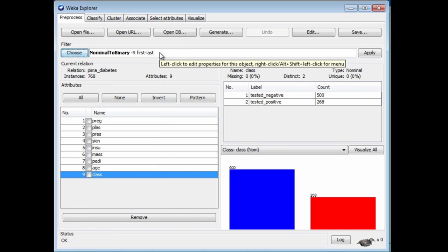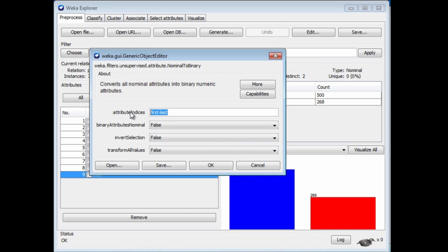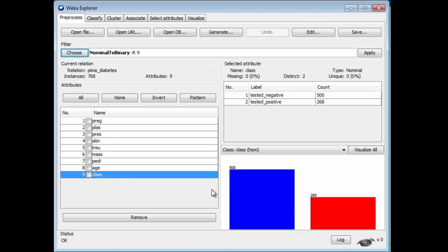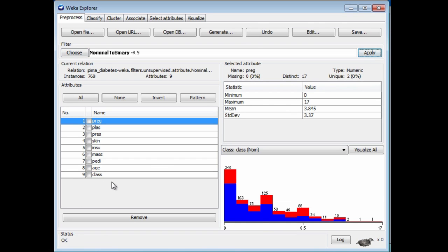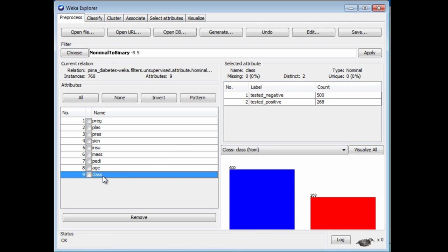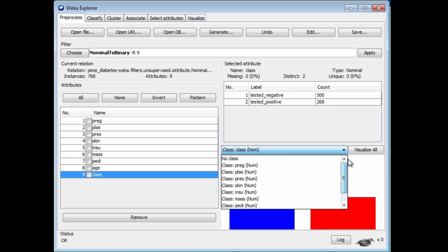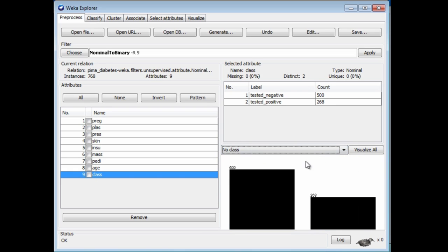We want to apply that to the 9th attribute. This will apply to all of the attributes. Let's go to the 9th attribute, and I'm hoping it will change this attribute from nominal to binary. Unfortunately, it doesn't have any effect. The reason it doesn't have any effect is that these attribute filters don't work on the class value. If I change the class value here, we're going to give this NoClass. This is not the class value for the data set. Run the filter again.